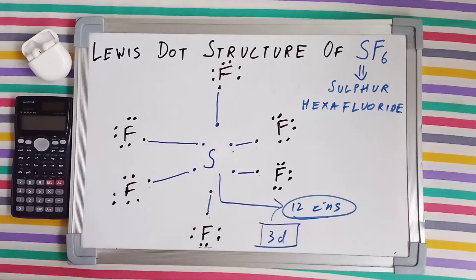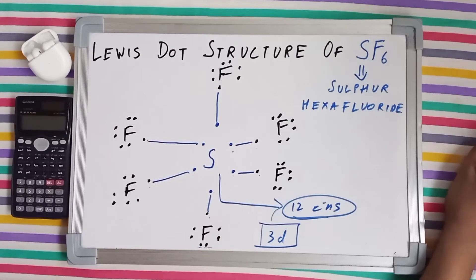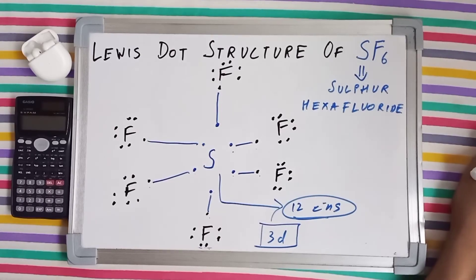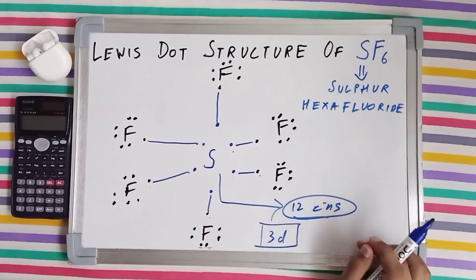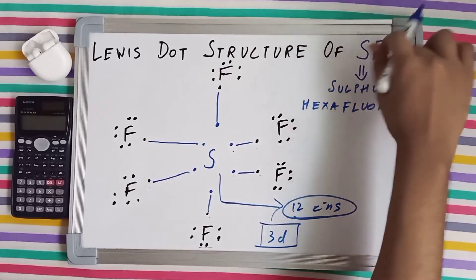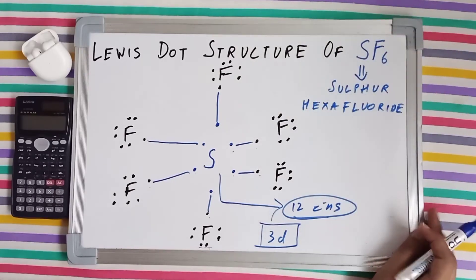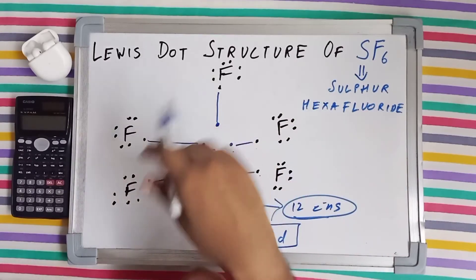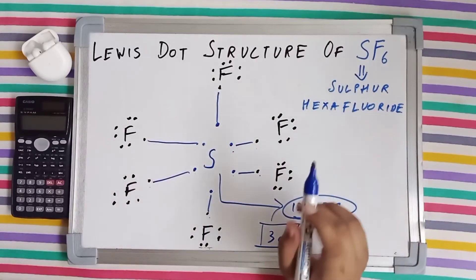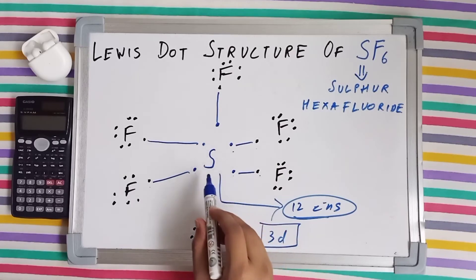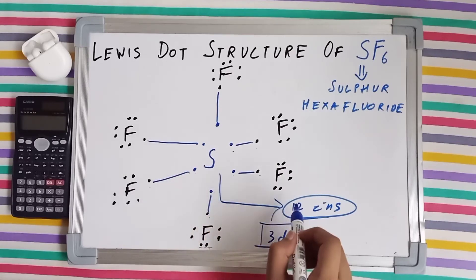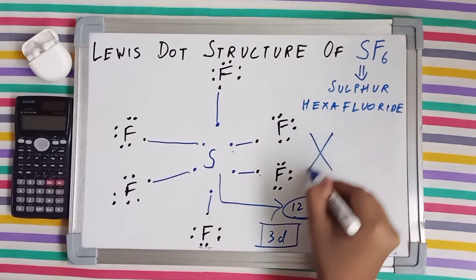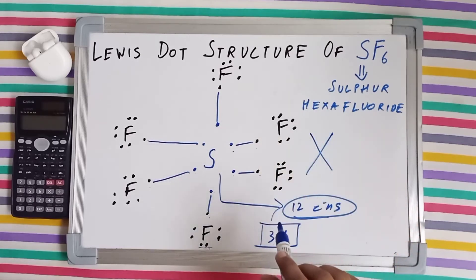And also this particular molecule, the SF₆, is an exception to Lewis octet rule, because according to Lewis, each atom in a molecule wants to complete its octet or duplet, duplet for hydrogen and helium, whereas octet for every other element except hydrogen and helium. So it has not completed its octet. It has more than eight electrons, which means this particular molecule is an exception to Lewis octet rule.